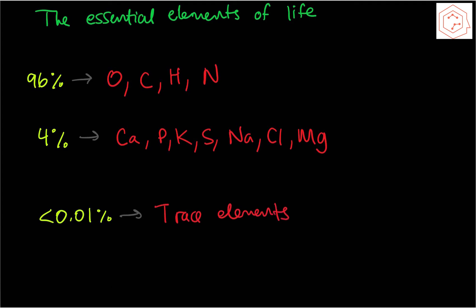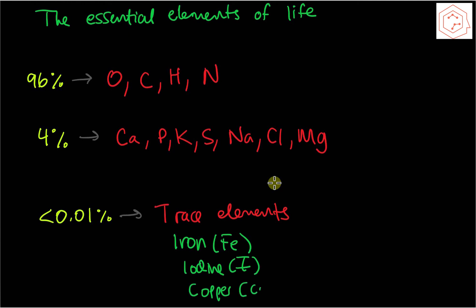Trace elements include iron (Fe), iodine (I), and copper (Cu). Iron is required for oxygen transport as part of hemoglobin. Iodine is responsible for hormone production in the thyroid gland, and copper is responsible for many metabolic enzymes such as cytochrome C oxidase.